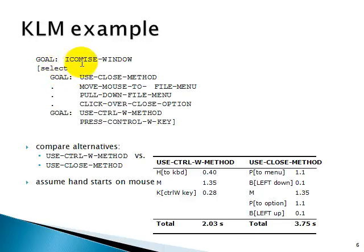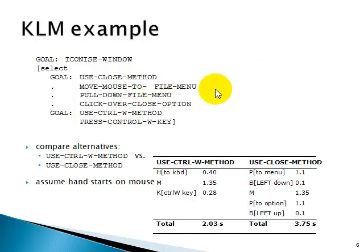The goal is to close a window. There are two methods: one is using the Close menu method, and the other is using the Control+W shortcut. The Control+W method is used when performing a game operation, while for all other applications the close method is applicable. To use the close method, you move the mouse to the File menu, wait for the pull-down menu to show the options, then select the Close option. To use the shortcut, you simply press Control+W.